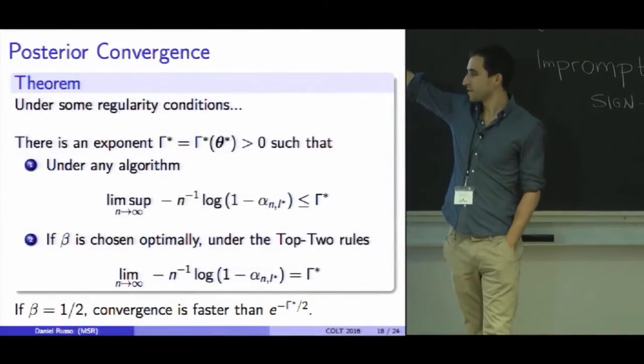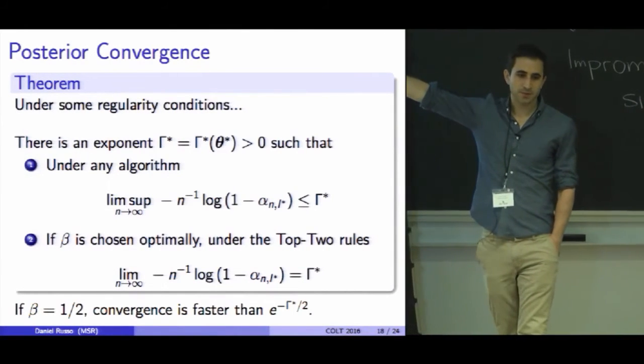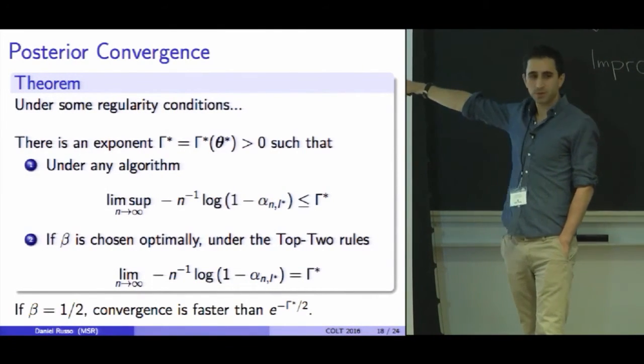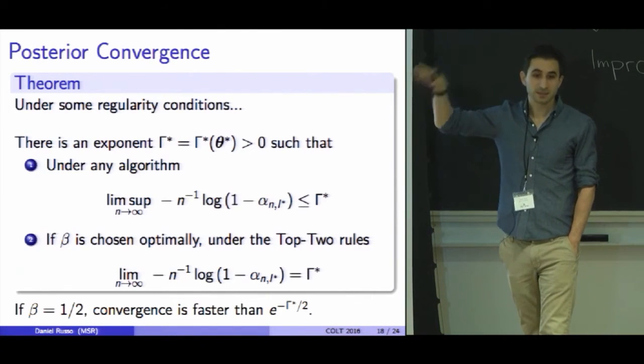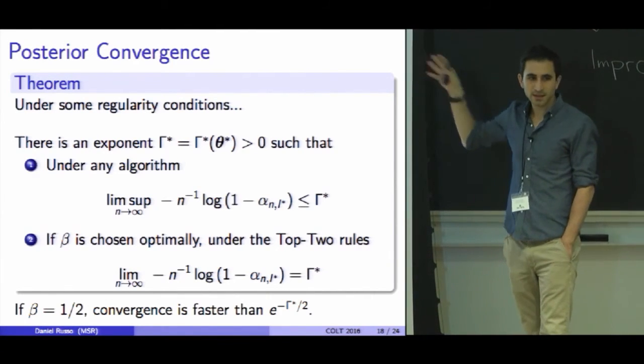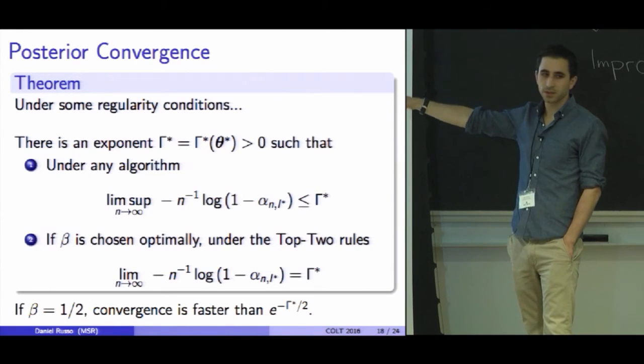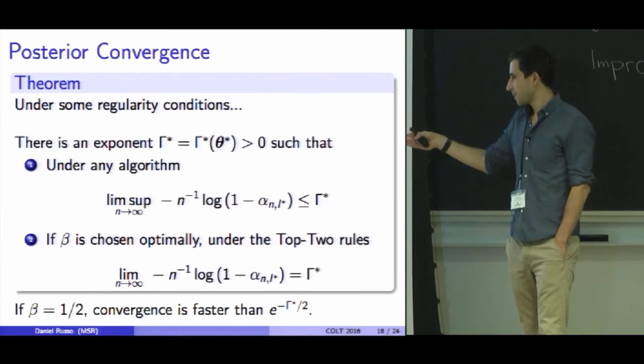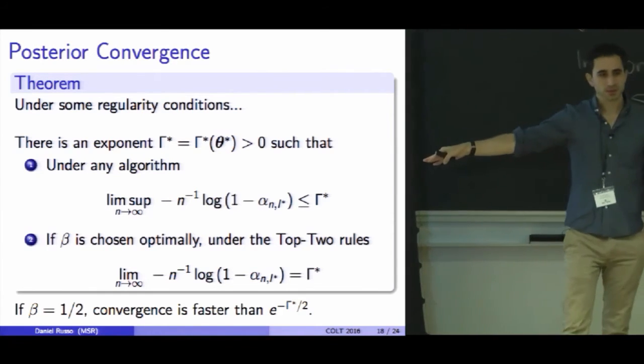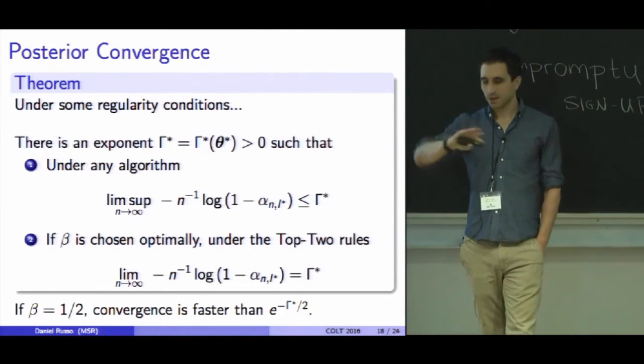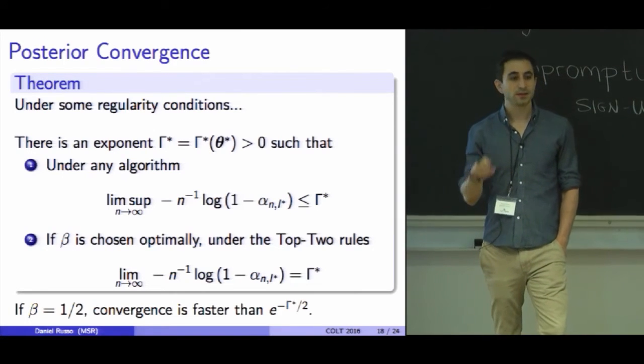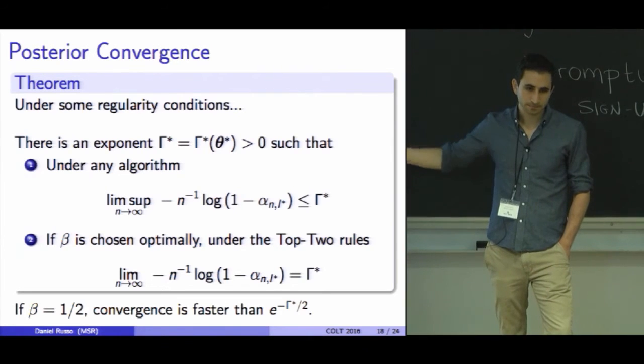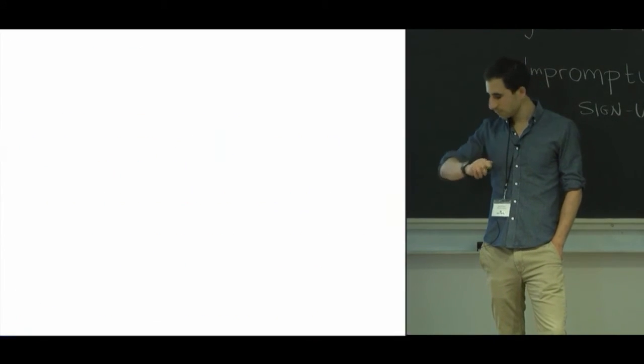And if you tune this β properly, you exactly recover that rate. In fact, we have results about how even a heuristic choice of β like β equals one half will give you within a constant of this rate.